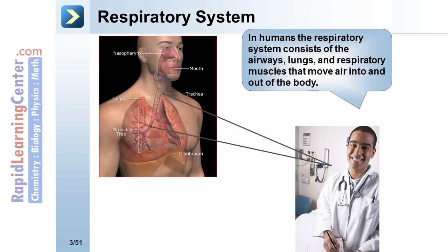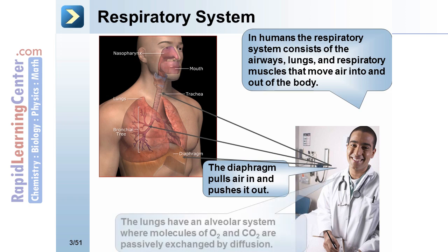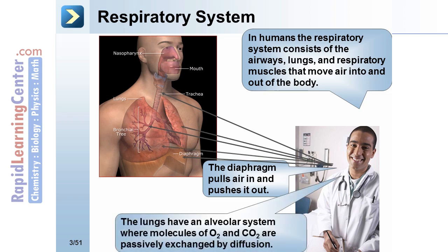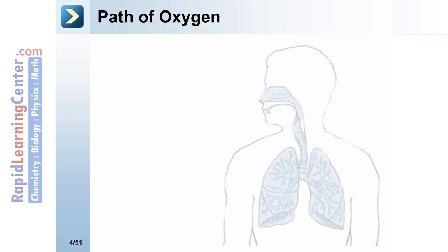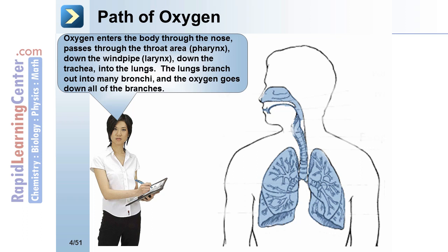In humans, the respiratory system consists of airways, lungs, and respiratory muscles that move air into and out of the body. The diaphragm pulls air in and pushes it out. The lungs have an alveolar system where molecules of O2 and CO2 are passively exchanged by diffusion. Oxygen enters through the nose, passes through the pharynx, down the larynx, down the trachea, and into the lungs, which branch out into many bronchi, and the oxygen goes down all of the branches.